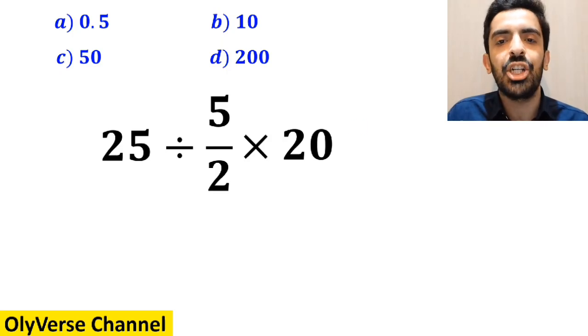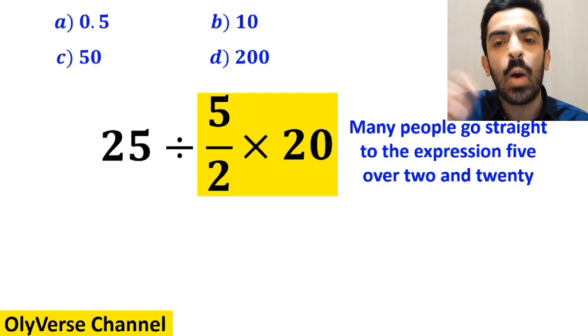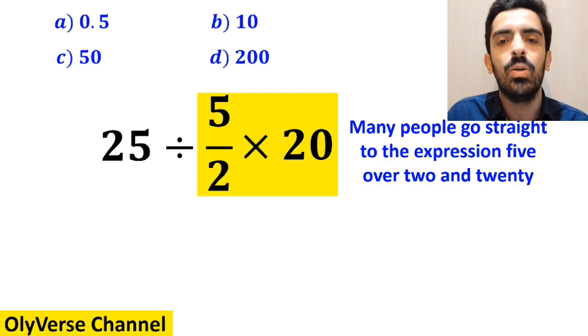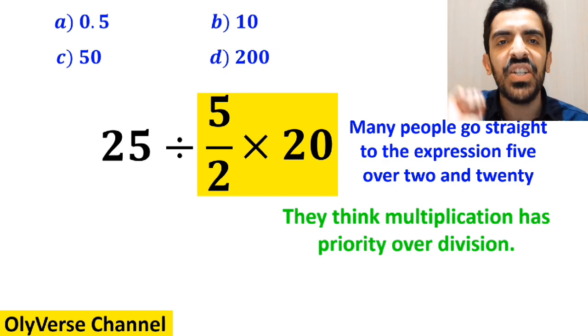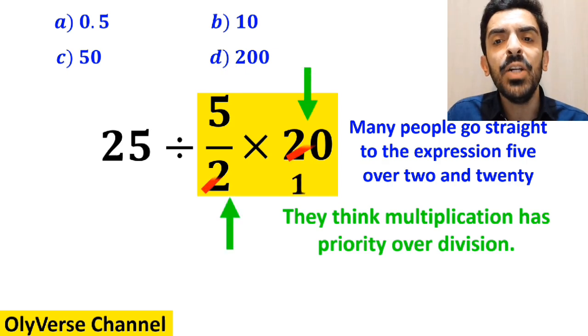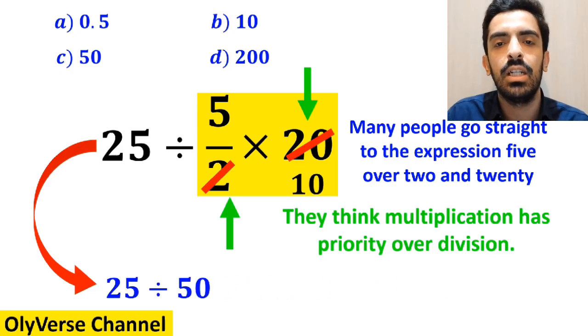At the beginning of solving this question, many people go straight to the expression 5 over 2 multiplied by 20, which I have highlighted in yellow, because they think multiplication has priority over division. And they say it's easy to simplify 20 with the 2 in the denominator and write this expression as 25 divided by 50, which finally gives the answer 0.5.